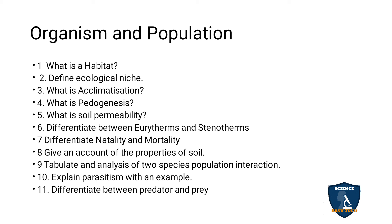Organism and Population. What is a habitat? Define ecological niche. What is acclimatization? What is pedogenesis? What is soil permeability? Differentiate eurytherms and stenotherms. Differentiate natality and mortality. Give an account of properties of soil. Tabulate the two-species population interactions. Explain parasitism with an example. Differentiate between predator and prey.